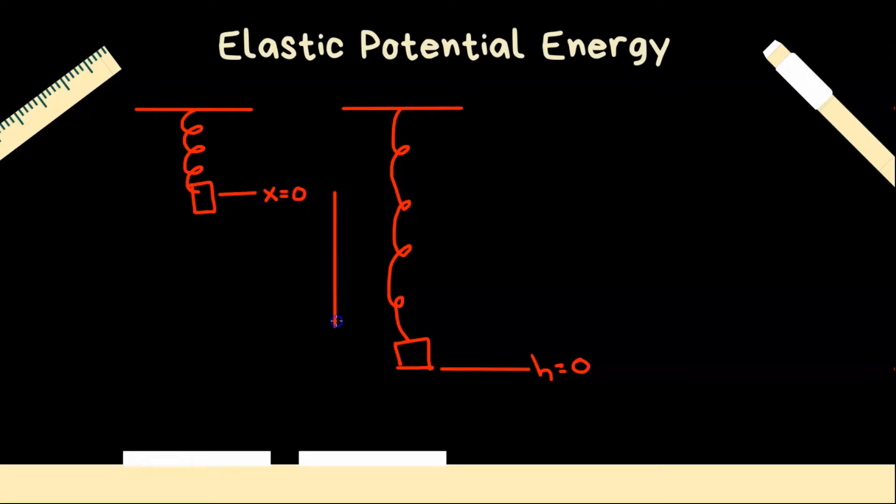Now what we want to find is how much that spring is going to be extended, so the value of x, to figure out how high above the ground we should place the spring so that our mass doesn't quite hit the ground.